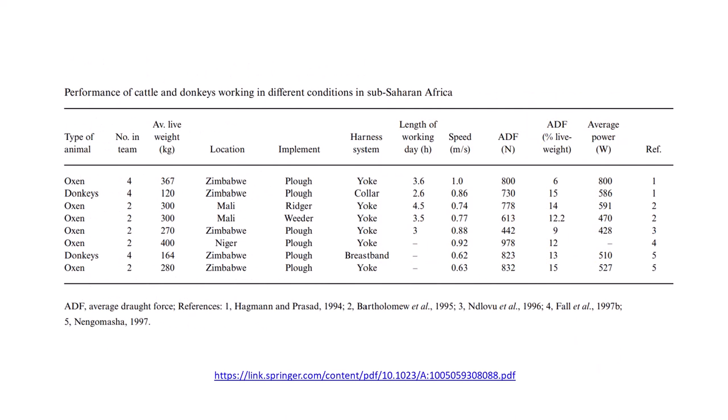This table provides examples of cattle and donkeys performing primary tillage in Zimbabwe, Mali, and Niger. Primary tillage operations such as plowing and ridging occur at the beginning of the planting season when draft animals may be in poor physical condition due to lack of quality feed during the dry season. The animals are typically small and work in teams of 2 to 4. The average working draft force was about 12 to 15% of their live weight over a 3 to 4 hour workday.